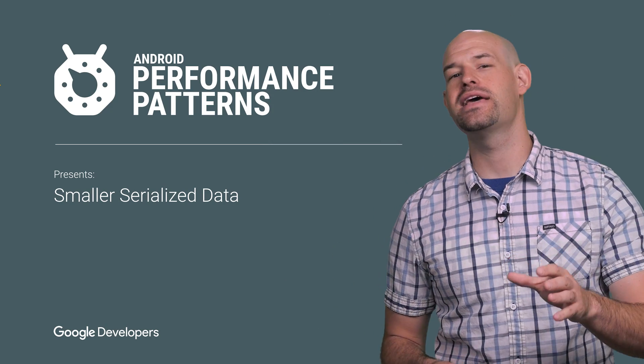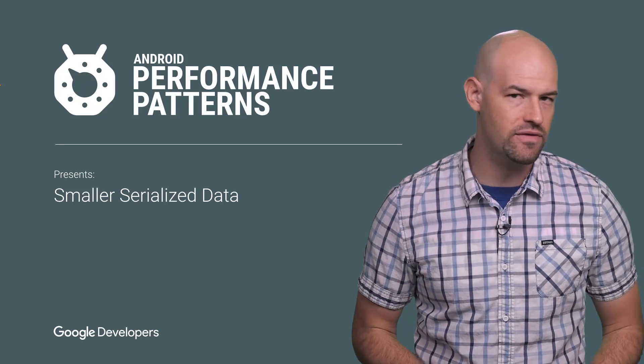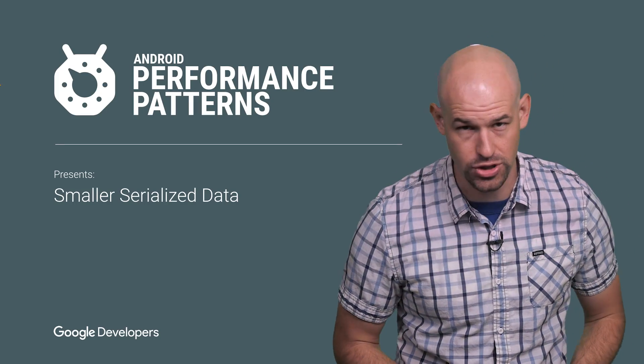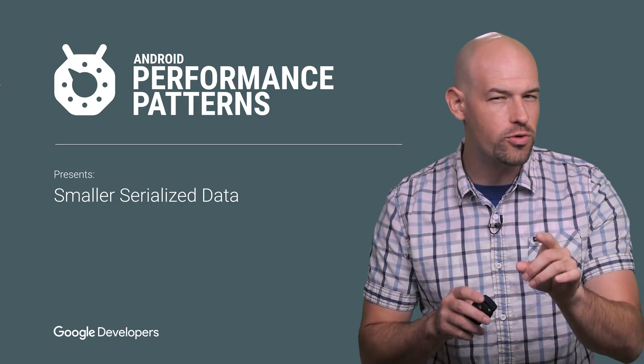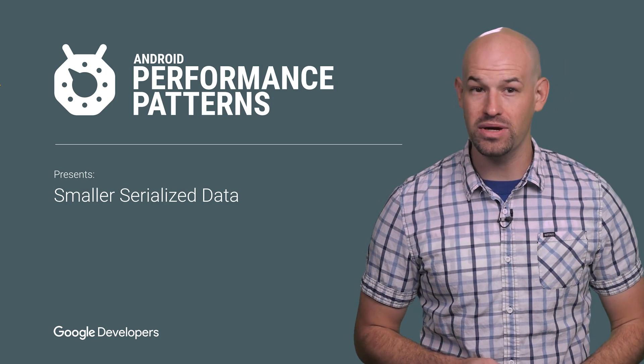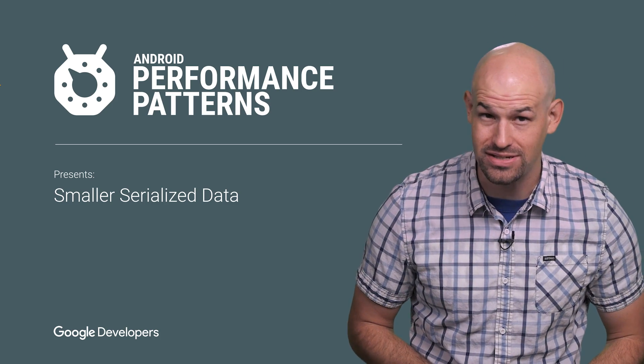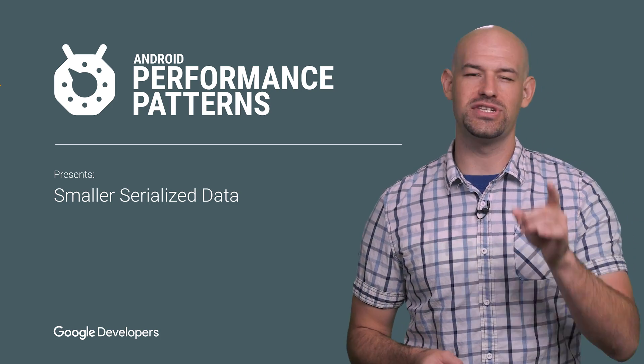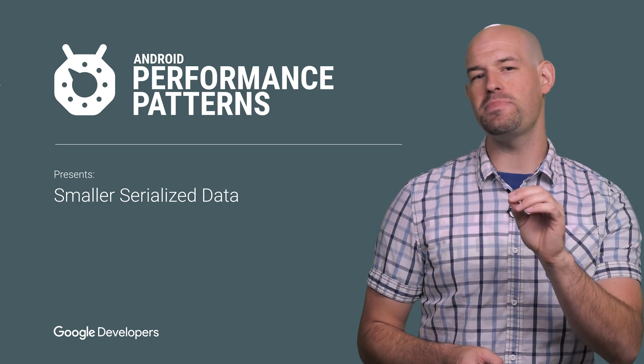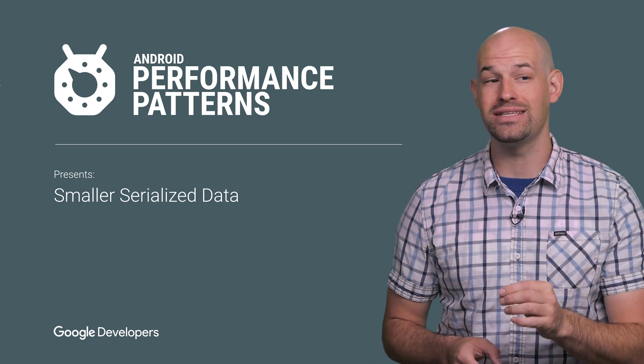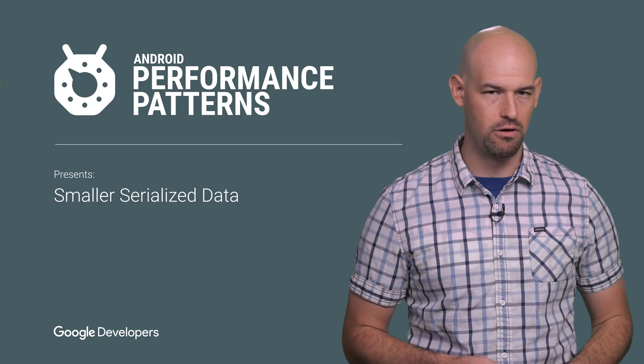For mobile applications, serialized data is a large and constant chunk of information that you have to pull down from your servers. But did you know that the ordering of the data inside your serialized form can have a huge impact on its resulting size? My name is Colt McCandless, and when it comes to serialized data, it might be worthwhile to kick your object-oriented standards to the curb for something a little more powerful.